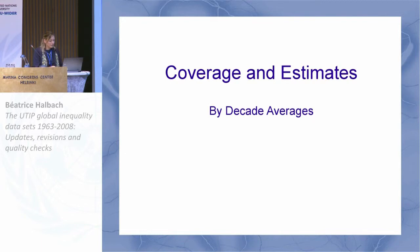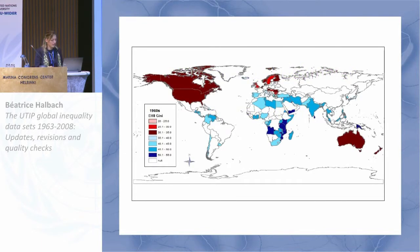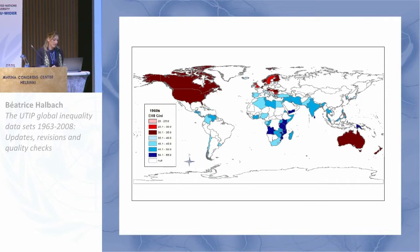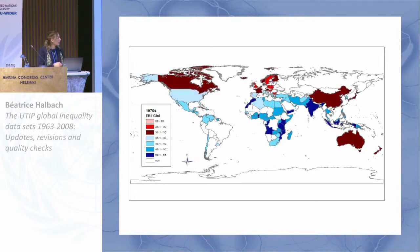First, I'd like to show you some maps that highlight the coverage of the EHI estimates by decade. Here we have the 1960s. The red hues represent values of the Gini coefficient below 35, with countries with the lowest inequality in pink. The blue hues represent values above 35, with the highest inequality in dark blue. Here you can see Canada and the U.S. with values in the low 30s, on par with some of the Scandinavian countries and with Australia. And then here in the 1970s, you see increases in inequality in the U.S. and India, and we have more data coverage with China appearing on the map.